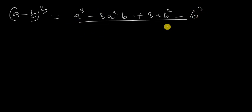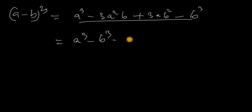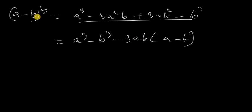A minus B whole cube equals A cube minus B cube minus 3 A B times A minus B. If you have a minus whole cube, you can use this formula.